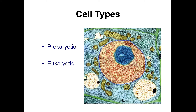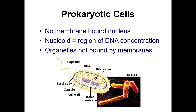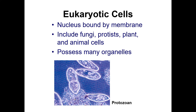There are two major types of cells: prokaryotic and eukaryotic. Prokaryotic cells were the first type on Earth — these include bacteria and archaea and they're very simple. They have a cell wall, a flagellum which is a little tail used for movement, DNA clumped together in the center, and ribosomes for making proteins. There is no membrane-bound nucleus, and organelles are not bound by membrane — they flow freely in these cells.